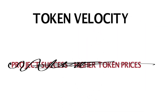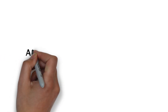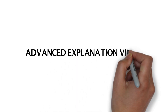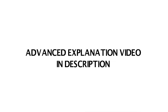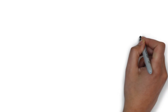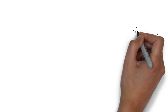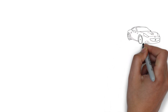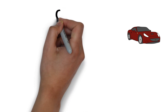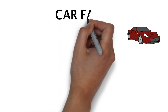This may sound confusing but don't worry, I'm going to be breaking this down and making it very easy to understand throughout this video. This video will serve as the beginner explanation — don't forget to check out the advanced explanation video too, the link will be in the description. To explain token velocity, let's use an example. Let's imagine an application such as a decentralized Uber — we'll call this Carfair.